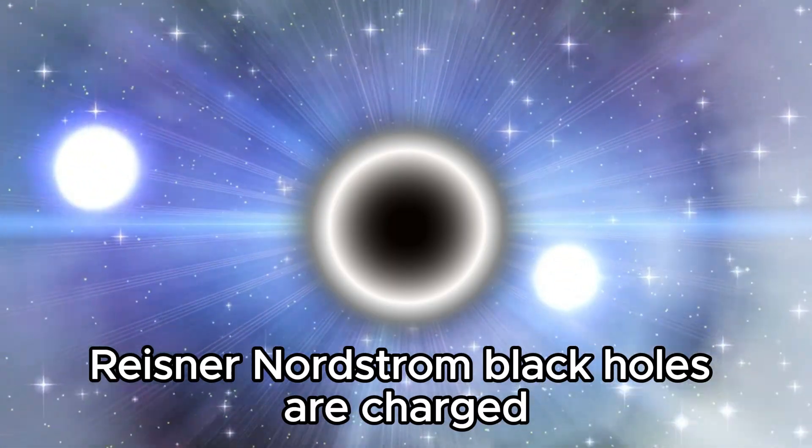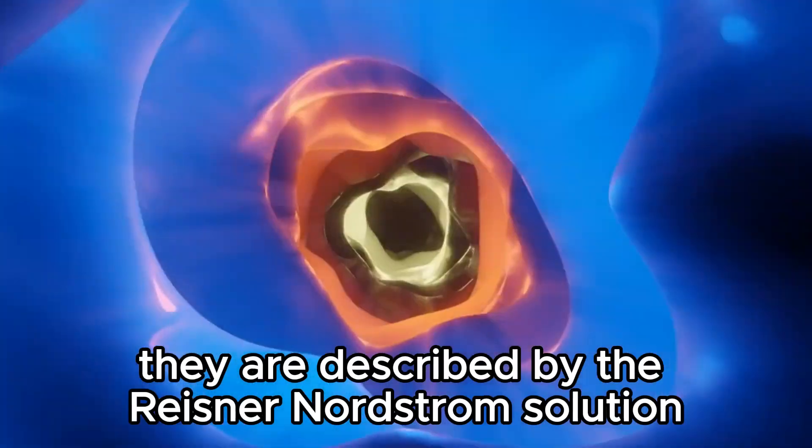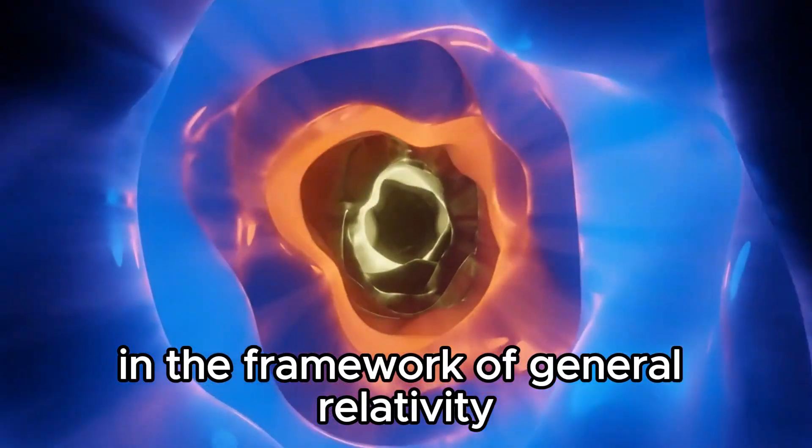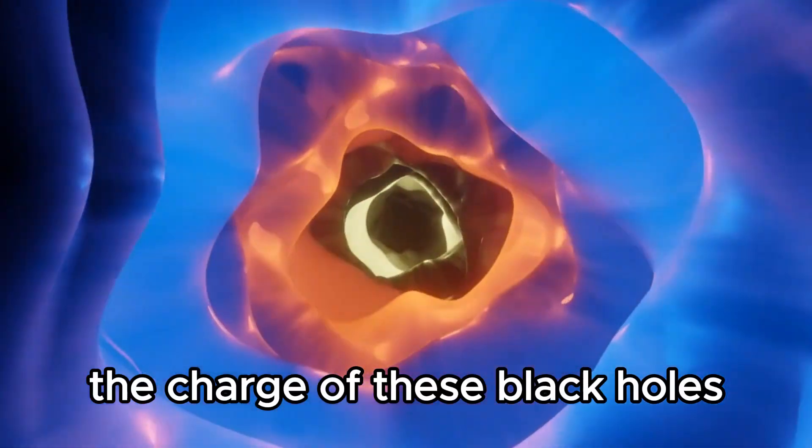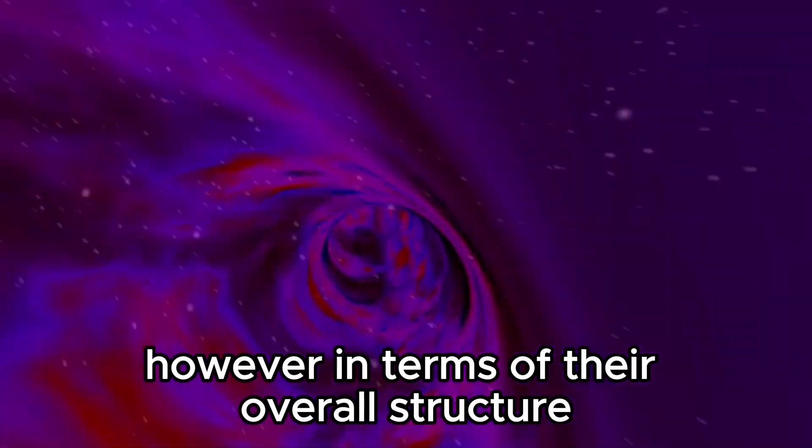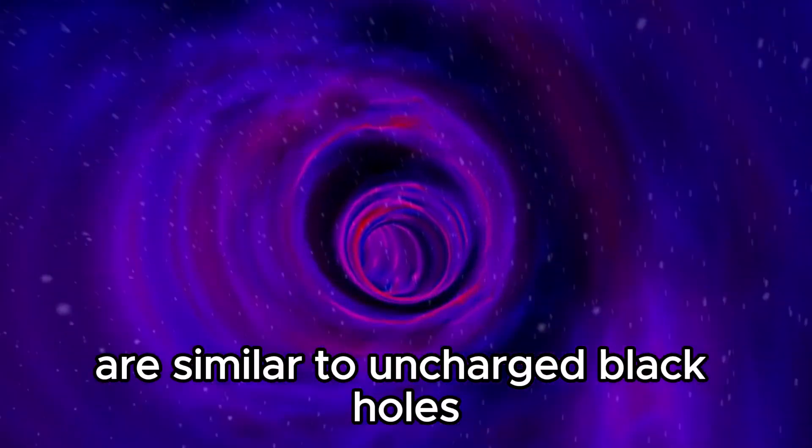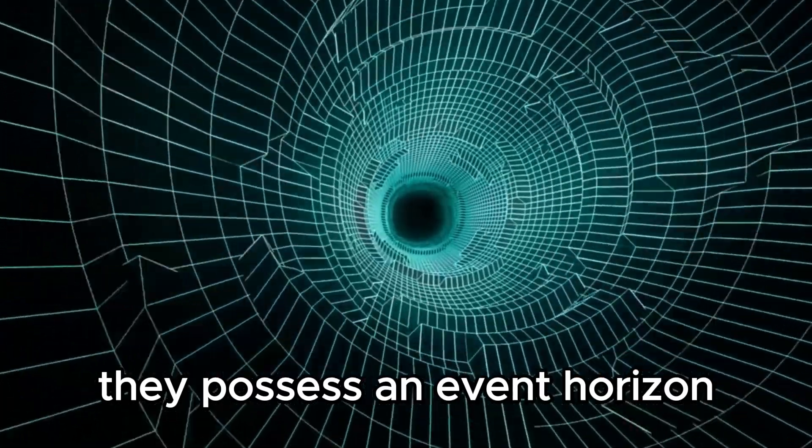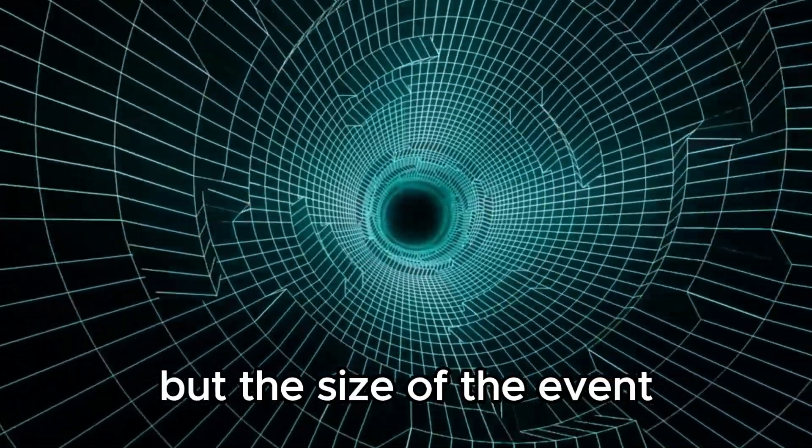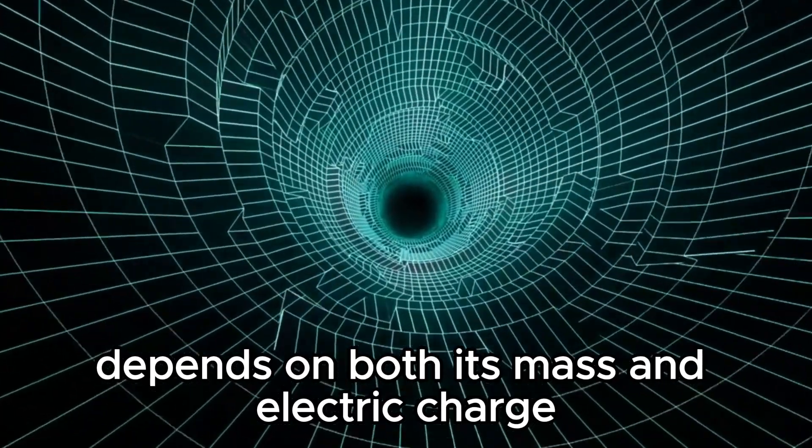Reissner-Nordstrom black holes are charged but non-rotating. They are described by the Reissner-Nordstrom solution in the framework of general relativity. The charge of these black holes affects the behavior of their gravitational field. However, in terms of their overall structure, Reissner-Nordstrom black holes are similar to uncharged black holes. They possess an event horizon, but the size of the event horizon for a Reissner-Nordstrom black hole depends on both its mass and electric charge.